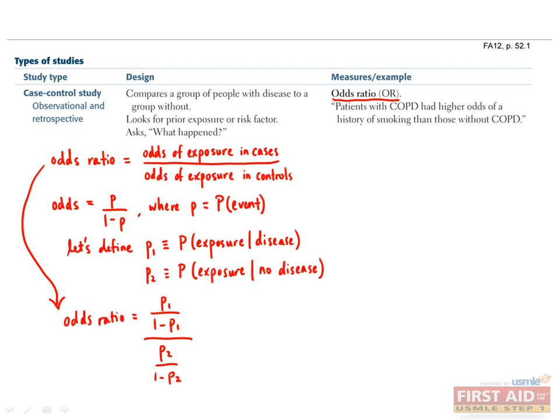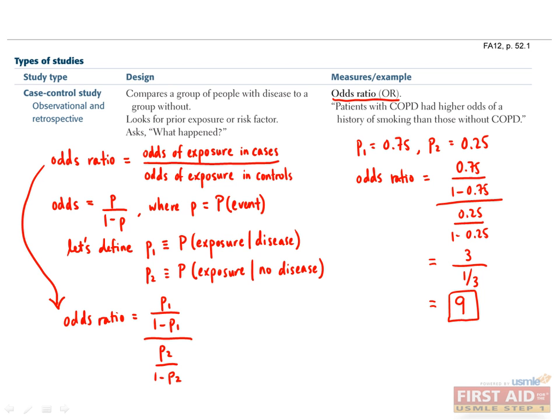Here you are looking into the past and comparing cases with cholangiocarcinoma to controls without cholangiocarcinoma, and analyzing the previous exposure to thorotrast to see if cases with cancer had higher exposure rates. Suppose the study finds that the probability of exposure to thorotrast in patients with cholangiocarcinoma is 0.75, while the probability of exposure to thorotrast in disease-free patients is 0.25. In other words, p1 equals 0.75 and p2 equals 0.25. Plugging the numbers into our odds ratio equation, we get an odds ratio of 9.